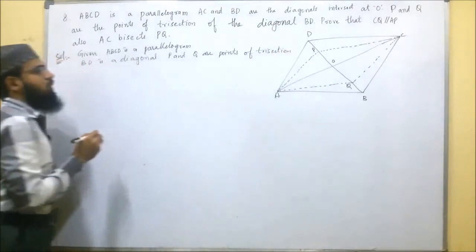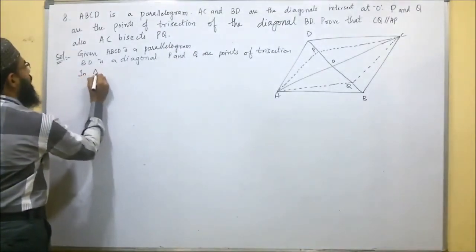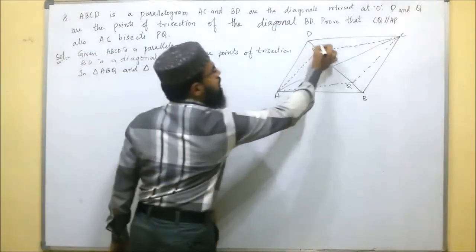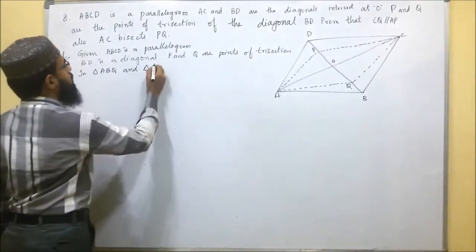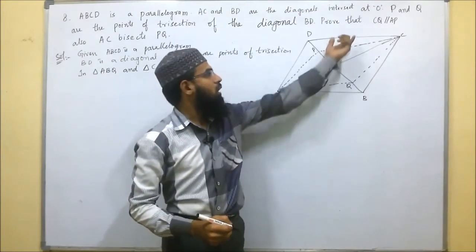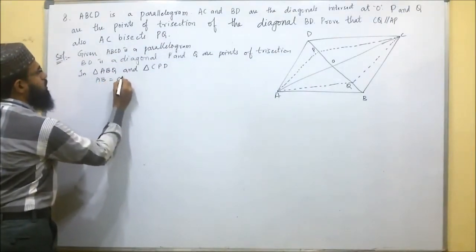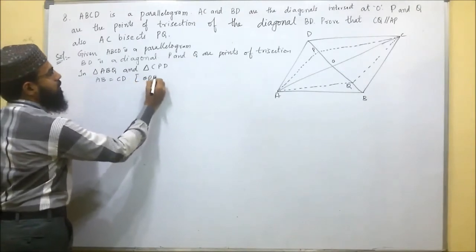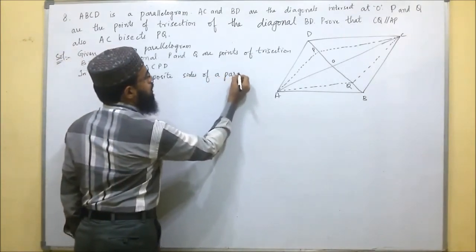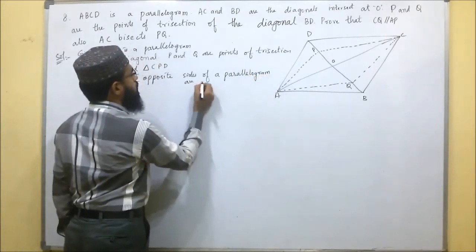We will consider two triangles: triangle ABQ and triangle CPD. In these two triangles, the opposite sides of a parallelogram are equal, so AB is equal to CD. Opposite sides of a parallelogram are equal.